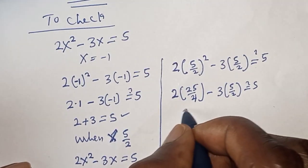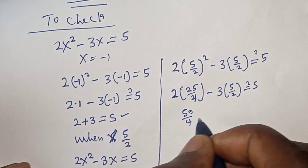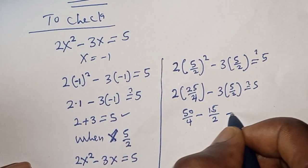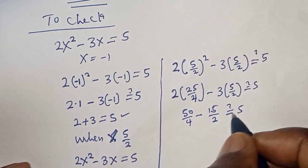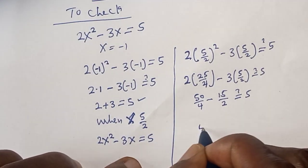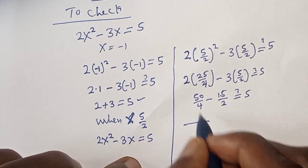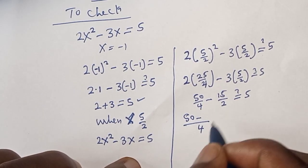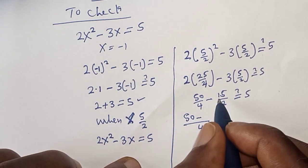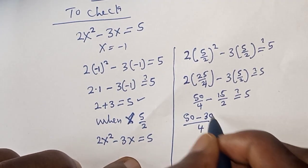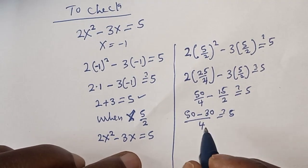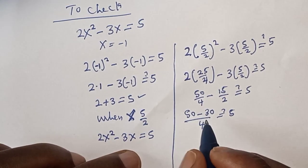We have 50/4 minus 15/2 equals 5. The LCM is 4, so 50/4 - 30/4 gives 50 - 30.